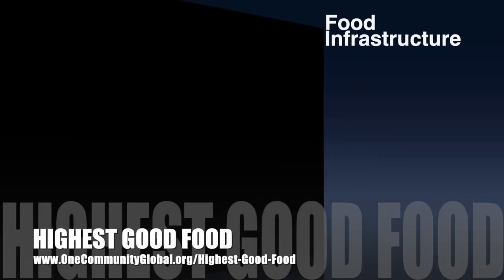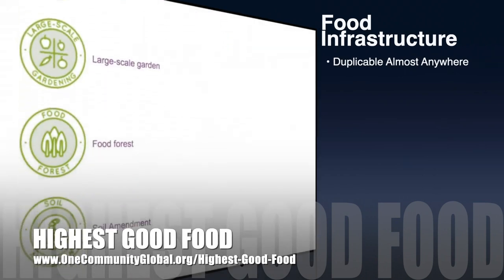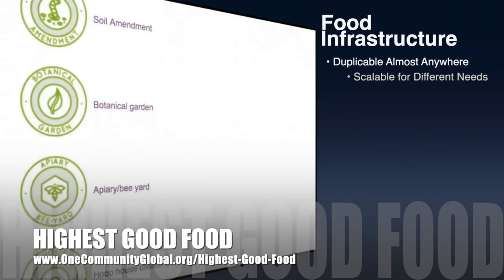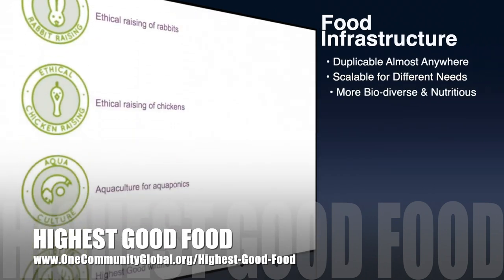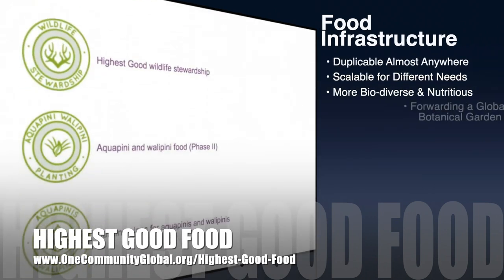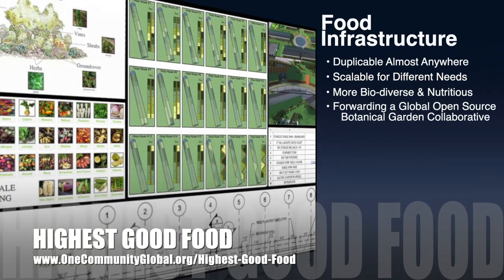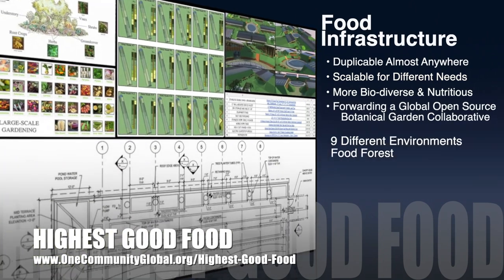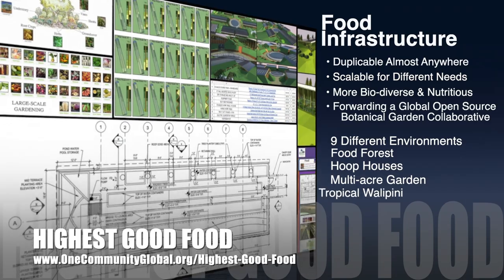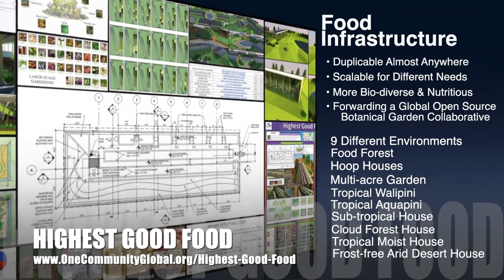One Community's approach to highest good food is duplicable almost anywhere, scalable for different needs, more biodiverse and nutritious, part of forwarding a global open source botanical garden collaborative, and includes nine different free shared and duplicable growing environments.